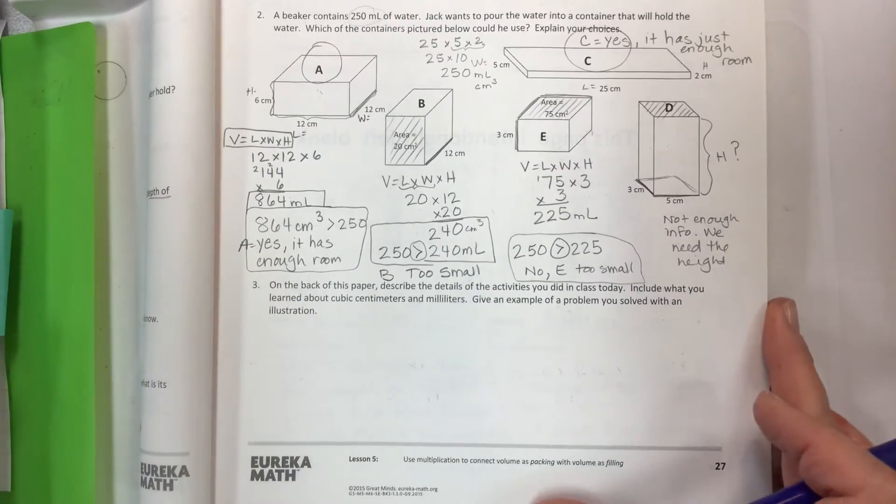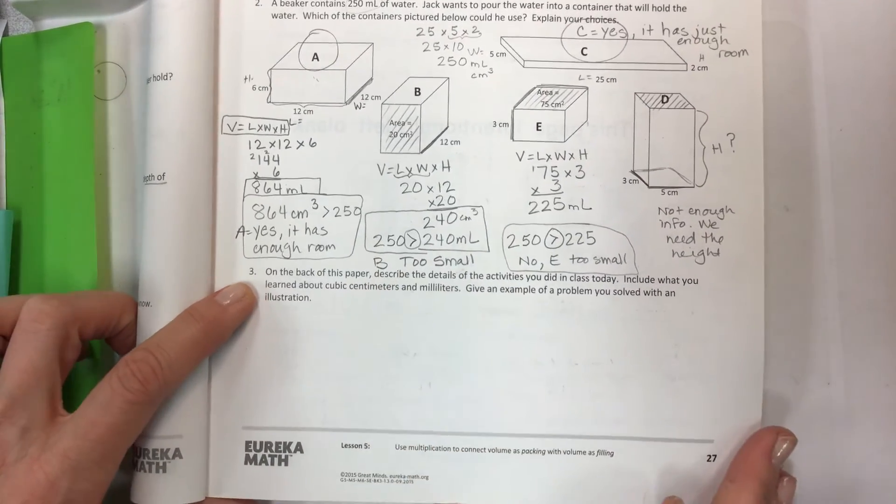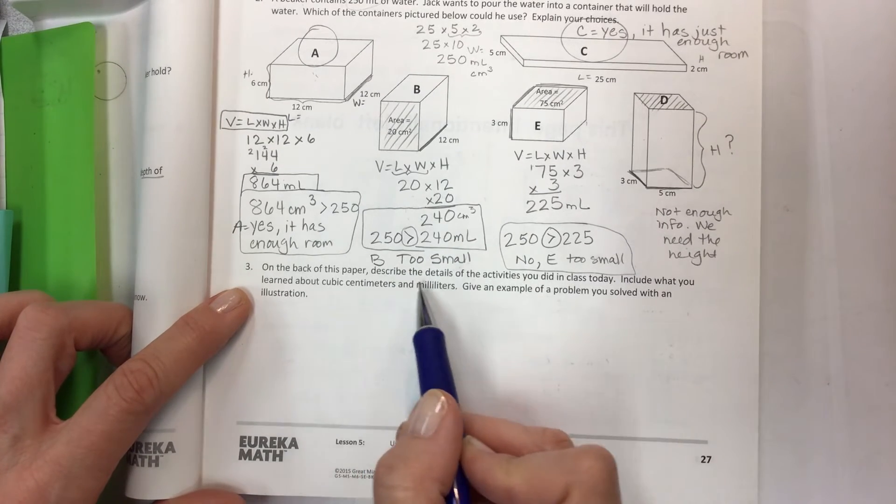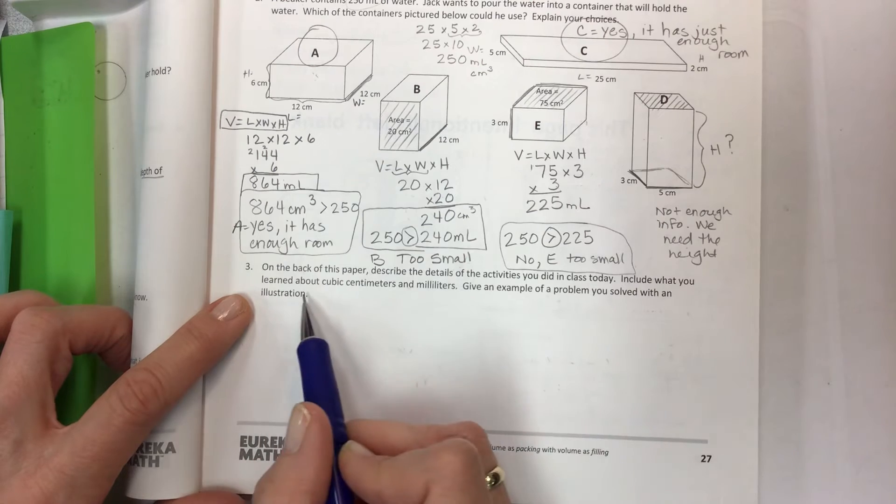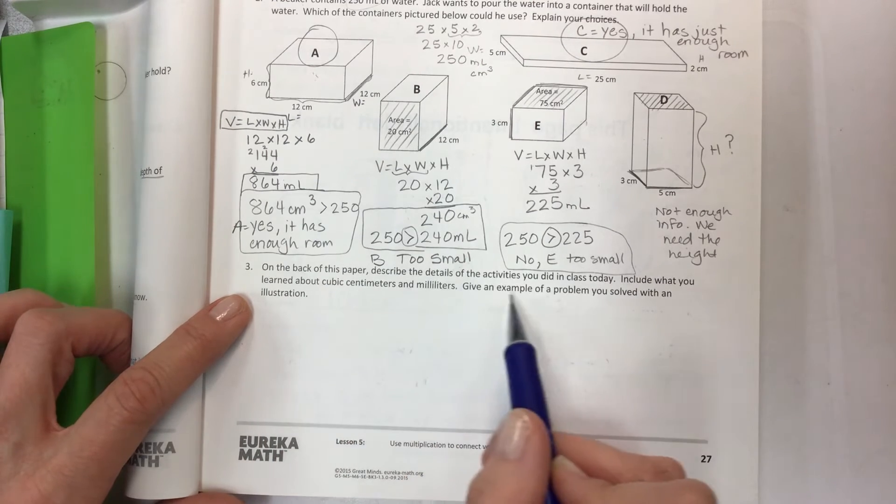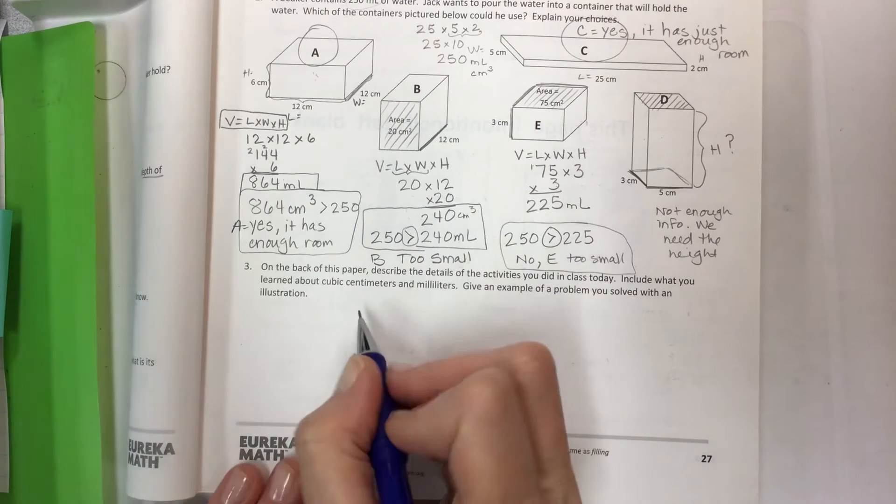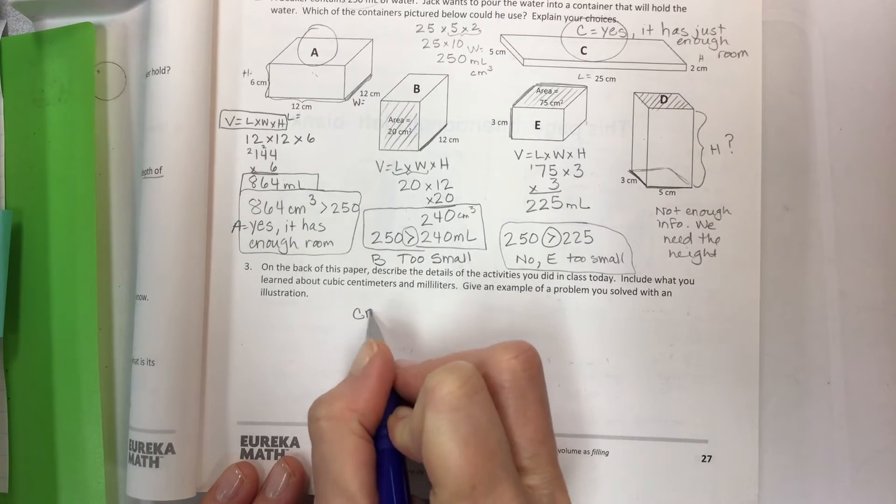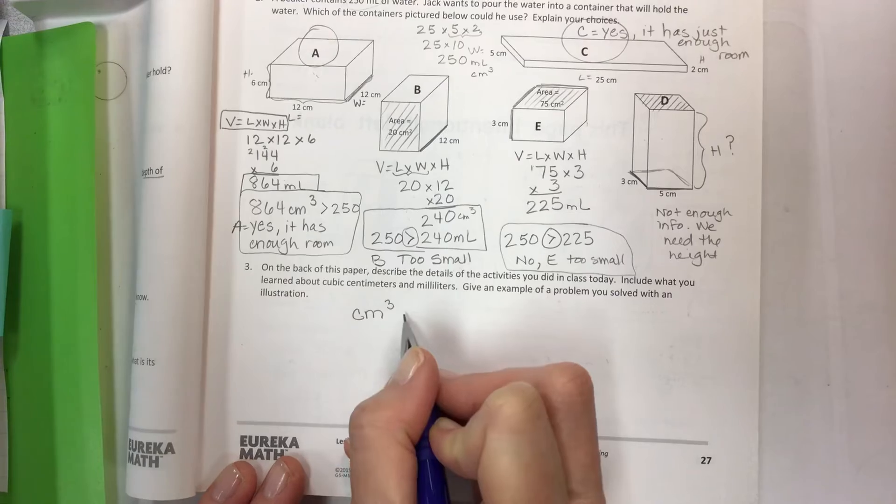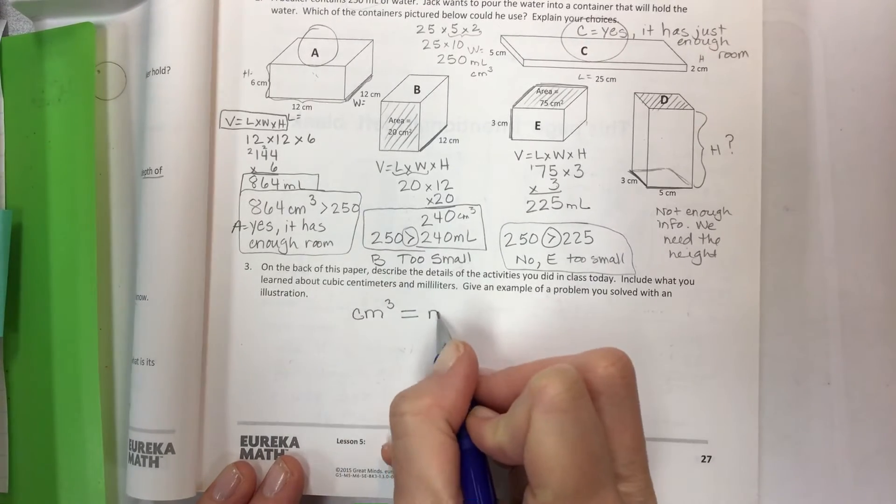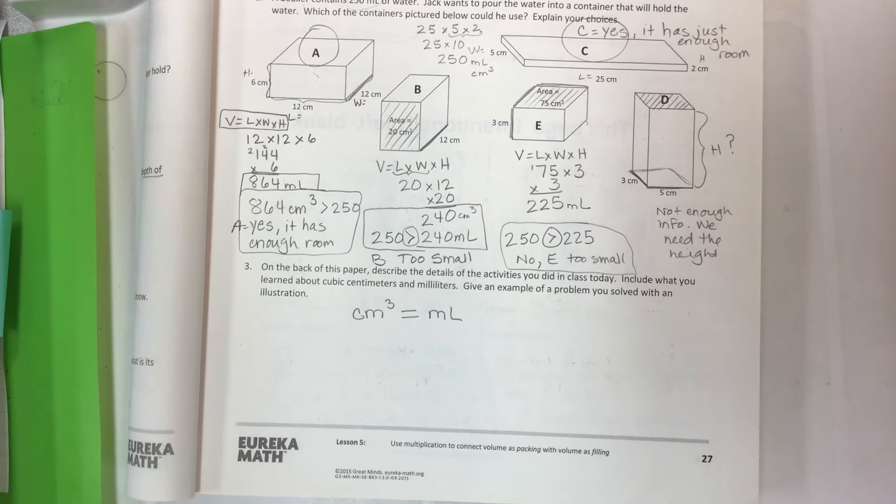The last question says on the back of this paper - and we never turn it over we just do our work right here - describe the details of the activities you did in class today. Include what you learned about cubic centimeters and milliliters, give an example of a problem you've solved with an illustration. Now what I am hoping that you guys know is that cubic centimeters or centimeters cubed are equal exactly to milliliters. Now that's what we learned today.